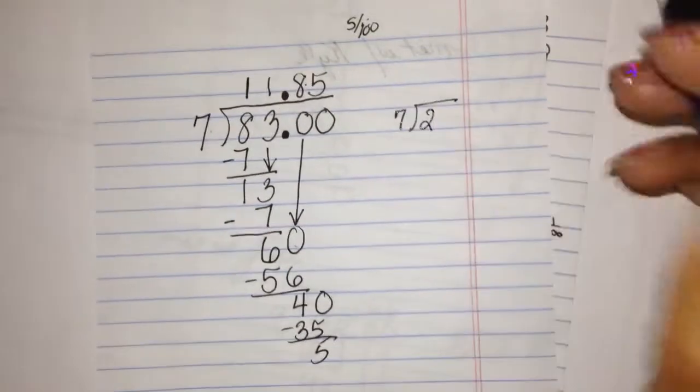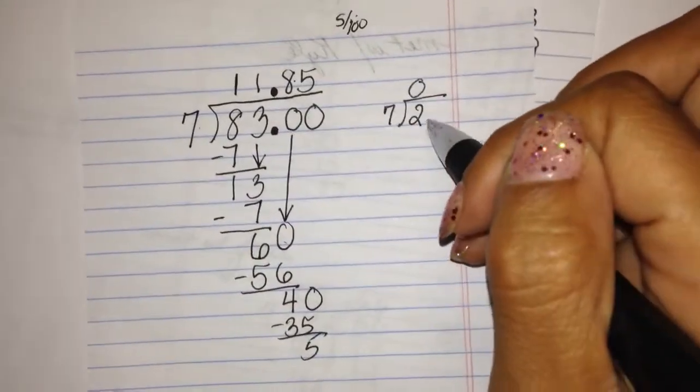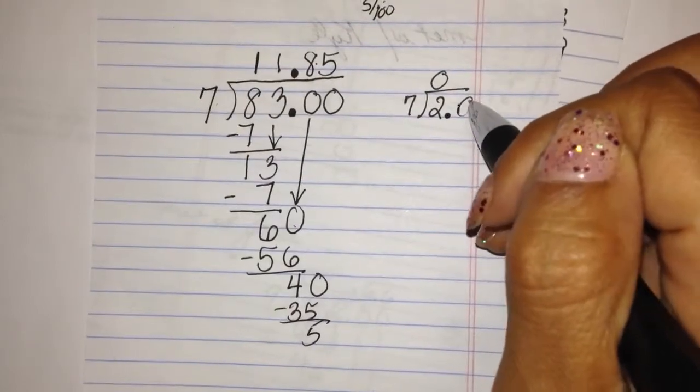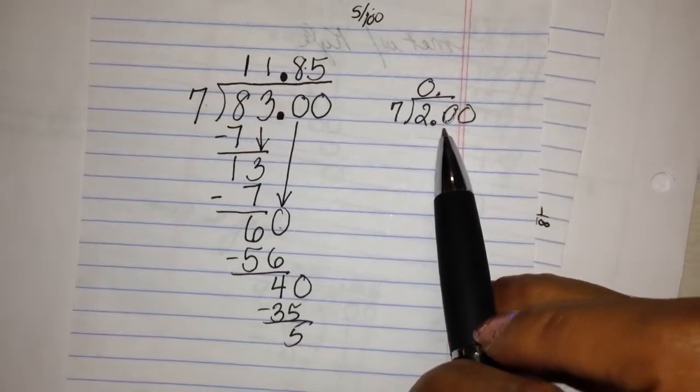And I'll give you another example. If you find that you cannot divide anymore, you're going to add a decimal and two zeros. That way, you can continue to have numbers to divide.